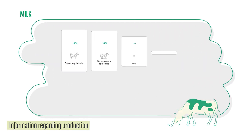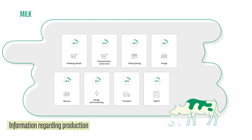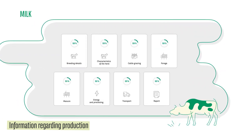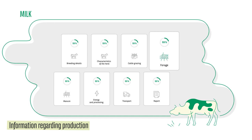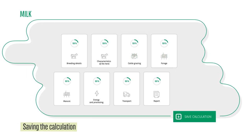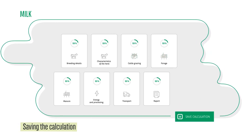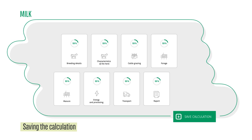If you produce milk, the calculator will prompt you to enter, for example, the size of your herd, the feed you use, and the grazing method. You may interrupt and save your calculation only to come back to it later.